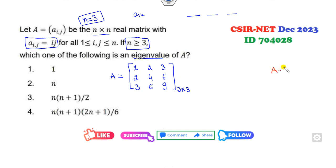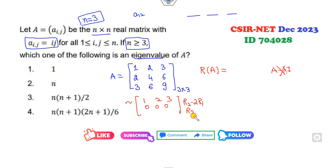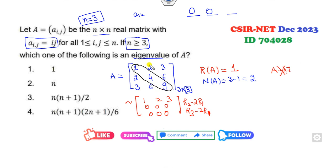Can you find the eigenvalues? There is no need to compute them directly. Can you find the rank of this matrix? Applying r2 minus 2r1, the second row becomes 0. Applying r3 minus 3r1, the third row also becomes 0. So the rank is 1. If the rank is 1, it means the matrix has 2 zero eigenvalues. The third eigenvalue is found from the trace, which is 1 + 4 + 9 = 14. So the eigenvalues are 0, 0, 14.